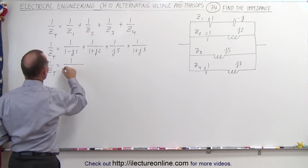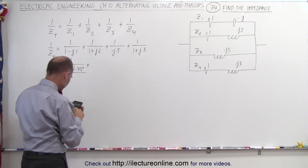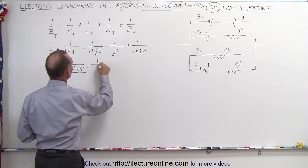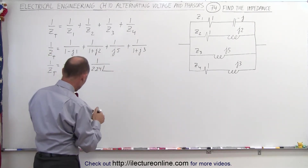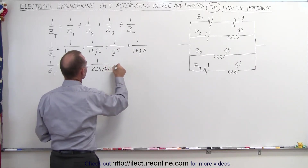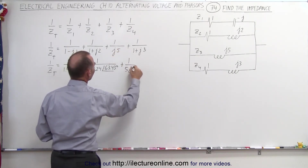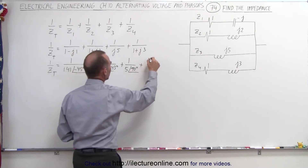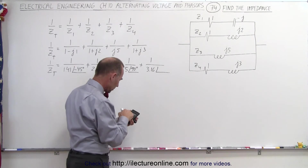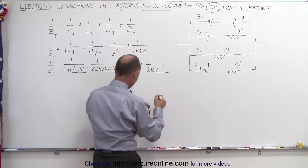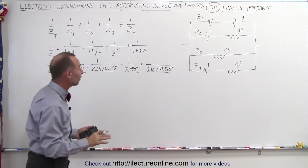So 1 over Z total equals 1 over 1.41 at minus 45 degrees, plus 1 over 2.24 at 63.43 degrees (the inverse tangent of 2), plus 1 over 5 at 90 degrees for the pure inductor branch, plus 1 over 3.16 (square root of 10) at 71.565 degrees. We use an extra decimal place to eliminate rounding errors.